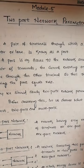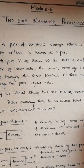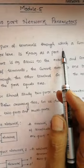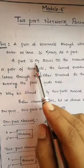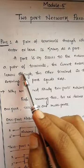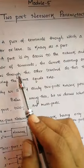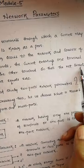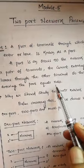In this video we will discuss two-port network parameters. First, the definition of a port: a pair of terminals through which a current may enter or leave is known as a port. A port is an access to the network and consists of a pair of terminals. The current entering one terminal leaves through the other terminal, so that the net current entering the port equals zero.